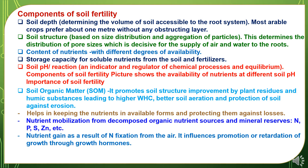Components of soil fertility: Soil depth determines the volume of soil accessible to the root system; most arable crops prefer about one meter without any obstructing layer. Soil structure, based on size distribution and aggregation of particles, determines the distribution of pore sizes, which is decisive for the supply of air and water to roots. Content of nutrients with different degrees of availability, storage capacity for soluble nutrients from soil and fertilizers, and soil pH reaction — which is an indicator and regulator of chemical processes and equilibrium — also determine soil fertility. The availability of nutrients at different soil pH levels is shown in the components of soil fertility picture.